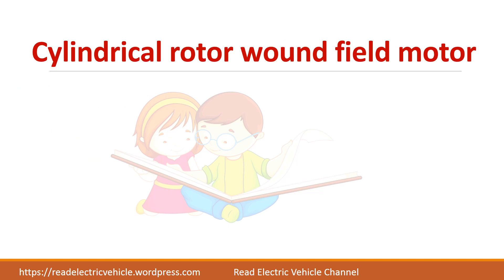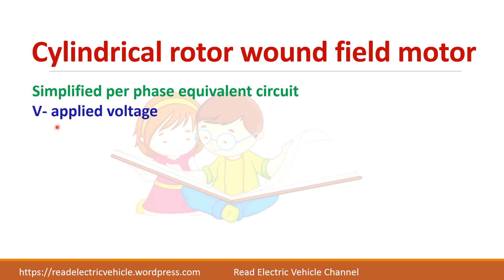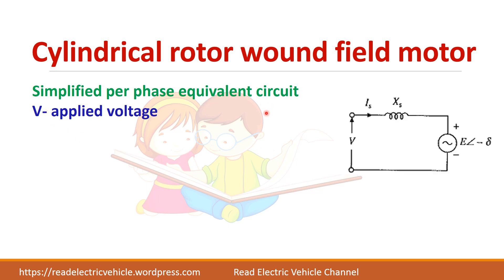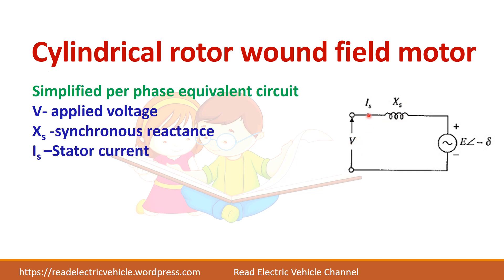We will analyze the cylindrical rotor wound field motor using the simplified equivalent circuit. Here V is the applied voltage, Xs is the synchronous reactance, Is is the stator current, and E is the excitation EMF. The angle for supply voltage V is taken as 0 degrees, and E will be lagging behind V by some angle delta.